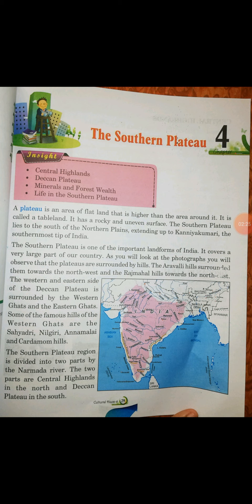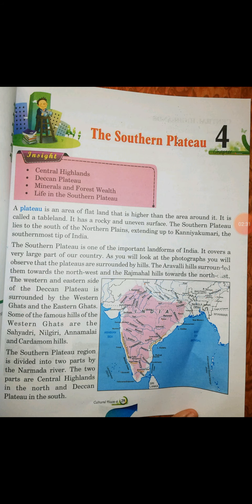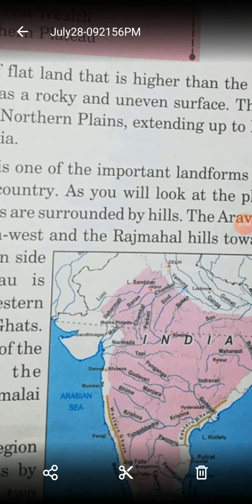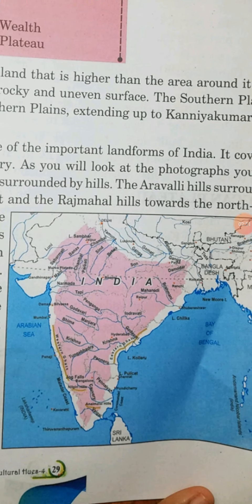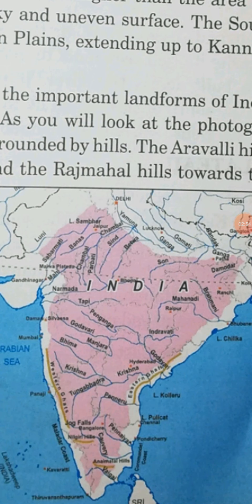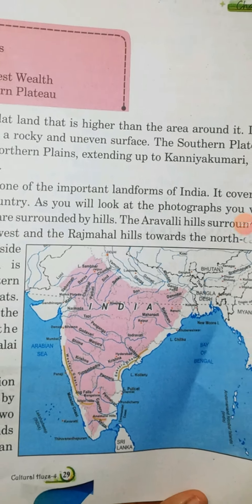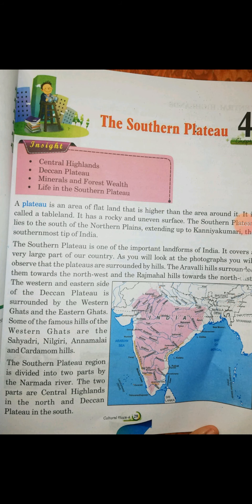The Rajmahal hills are towards the Northeast. The Western and Eastern side is surrounded by the Deccan Plateau. The sides of the Deccan Plateau are surrounded by the Western and Eastern Ghats. So, in the Northwest we have Aravali hills, in the Northeast we have Rajmahal hills, and we have the Western as well as Eastern Ghats — you can see the yellow lines there — which surround the Deccan Plateau towards the West and Eastern sides.